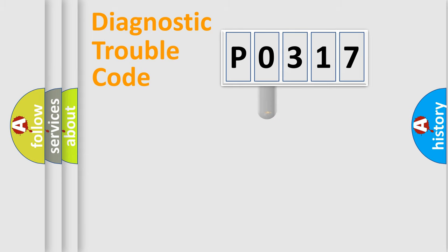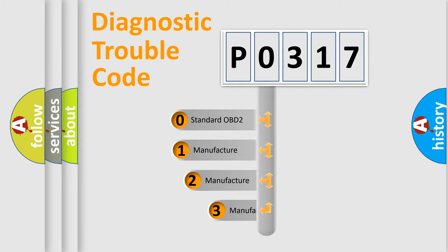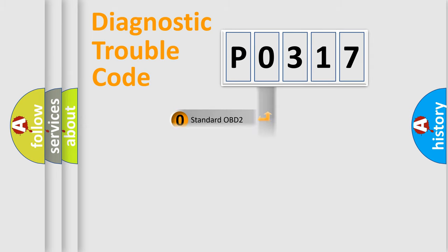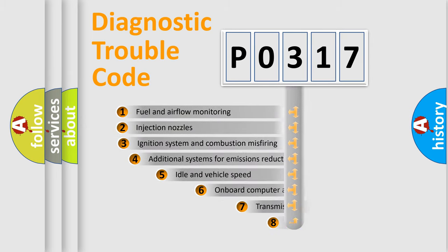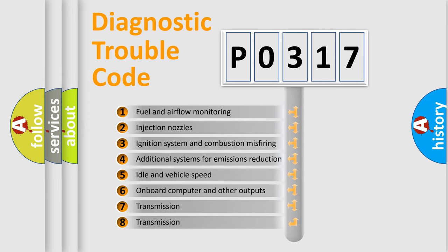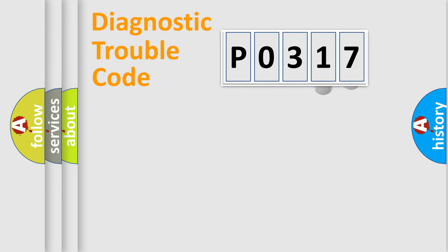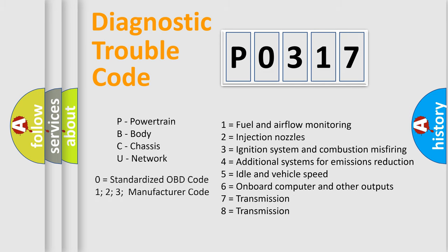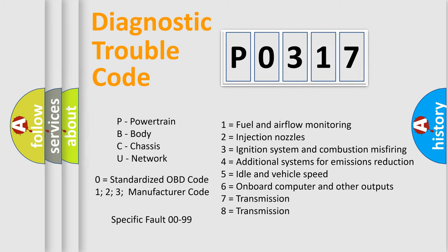This distribution is defined in the first character of the code. If the second character is expressed as zero, it is a standardized error. In the case of numbers 1, 2, or 3, it is a manufacturer-specific error expression. The third character specifies a subset of errors. The distribution shown is valid only for the standardized DTC code, and only the last two characters define the specific fault of the group. This division is valid only if the second character is expressed by the number zero.